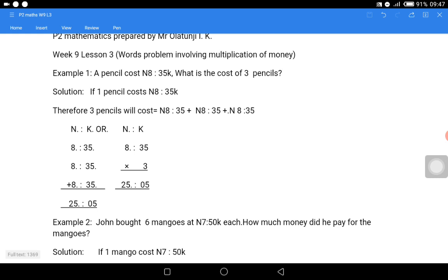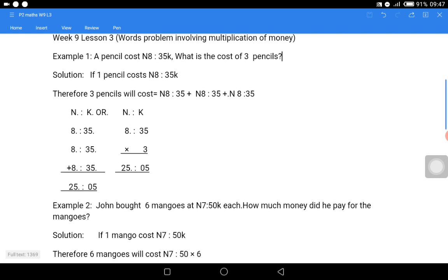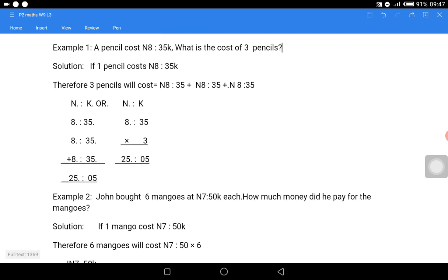Let us use example number one. A pencil costs N8.35k. What is the cost of three pencils? This is telling us that one pencil is being sold at the rate of N8.35k. Then if you buy three, how much are you going to pay for the three pencils?